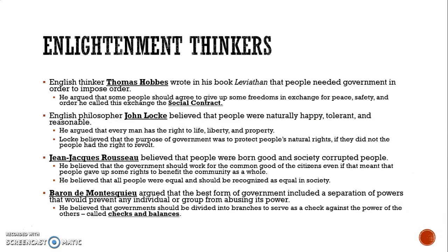There are some major Enlightenment thinkers you need to know. The English thinker Thomas Hobbes wrote in his book Leviathan that people need a government in order to impose order. Having lived through the English Civil War, he argued that some people should give up their freedoms in exchange for peace, safety, and order. This is called the social contract theory, in which people enter into a social contract with the government to have certain freedoms.